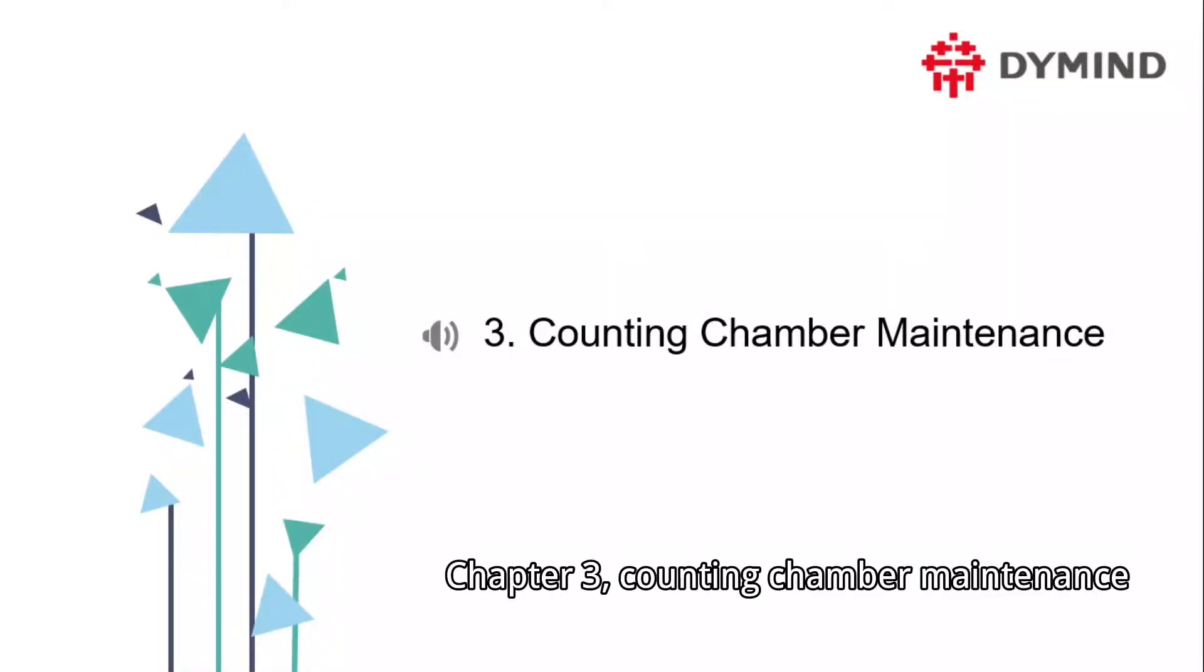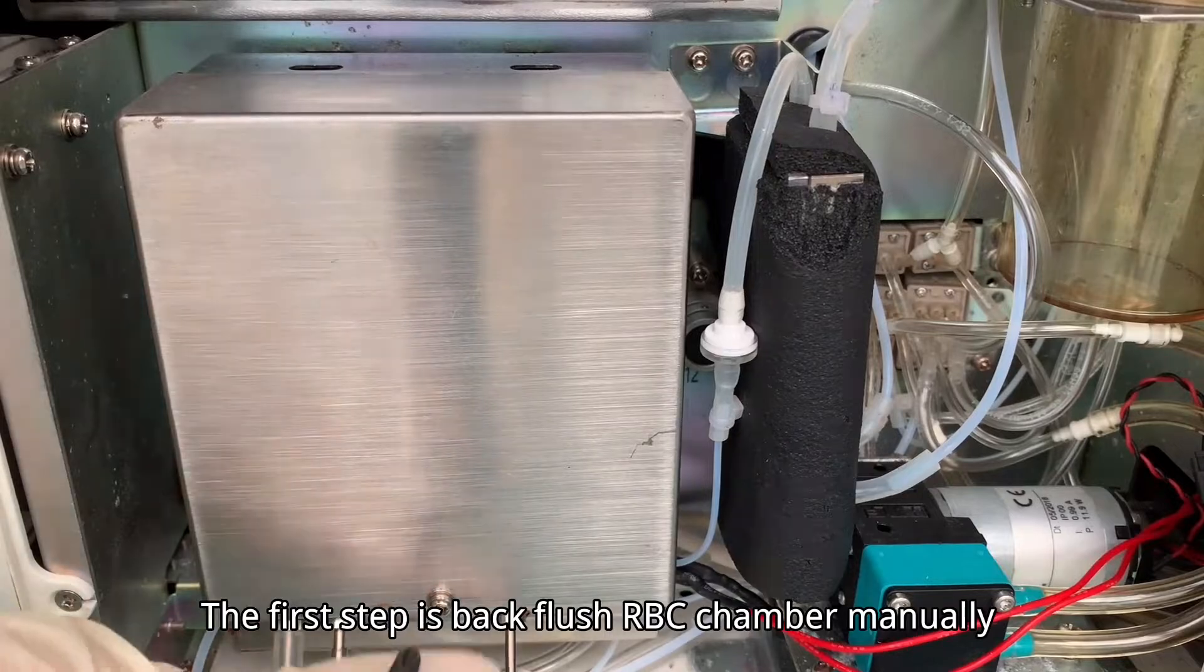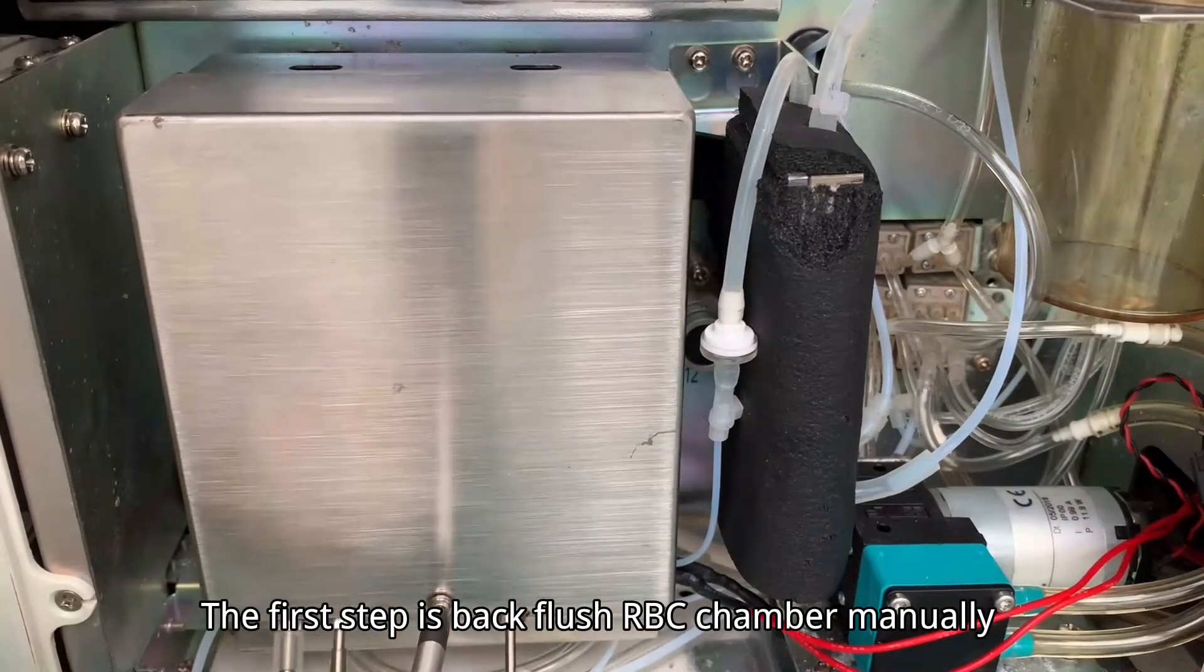Chapter 3: Counting Chamber Maintenance. The first step is to backflush the RBC chamber manually.